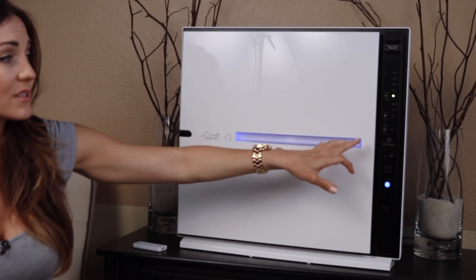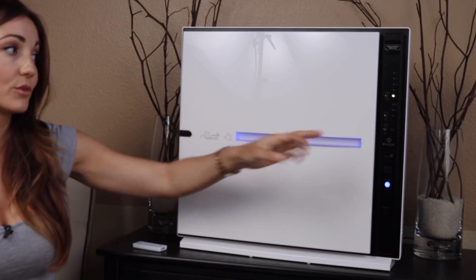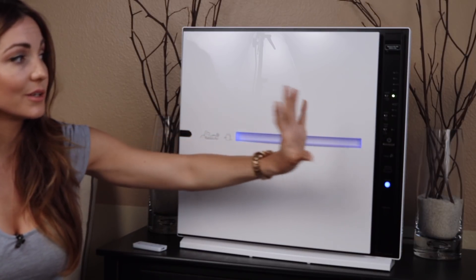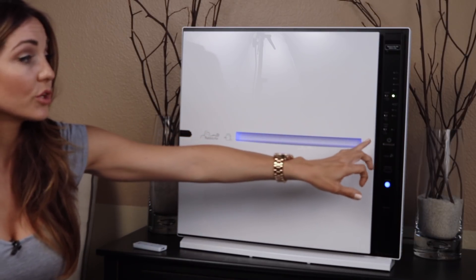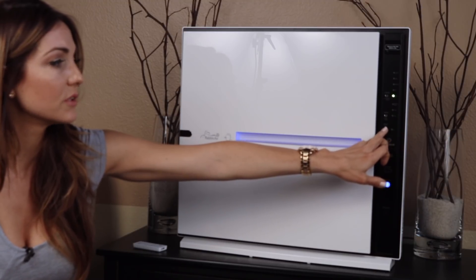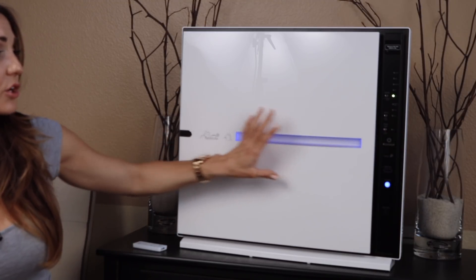It'll tell you when you need to reset your filter, which is great, so you don't have to worry about it or time it. A little light will come on and say, hey, you know, it's time to change the filter. You can also set the mood lighting. I don't know if you can catch it on, no, it's not when it's darker out.